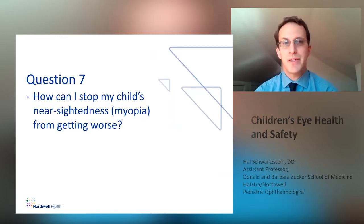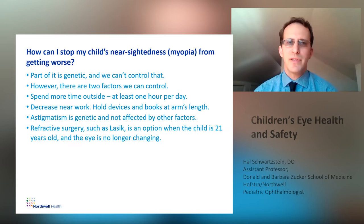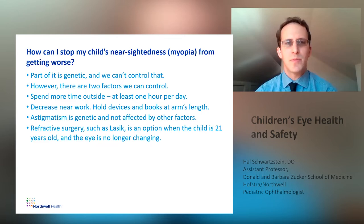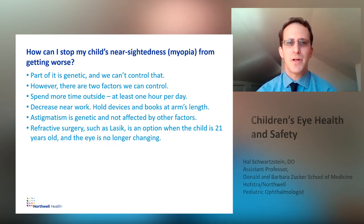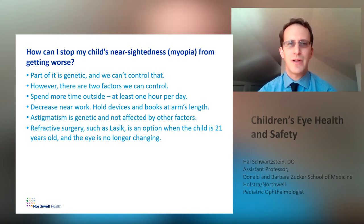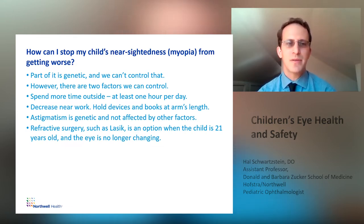Question seven: how can I stop my child's nearsightedness or myopia from getting worse? Part of it is genetic and we can't control that. However, there are two factors that we can control. You can spend more time outside — at least one hour per day. Sunlight has been shown to slow down or decrease the progression of nearsightedness. You can also decrease near work. Holding devices and books at arm's length has been shown to stop the progression of nearsightedness. You don't have to keep your arms completely straight — a little bend at the elbow makes it more comfortable. Astigmatism is genetic and is not affected by other factors.